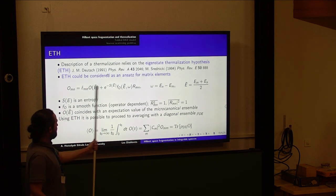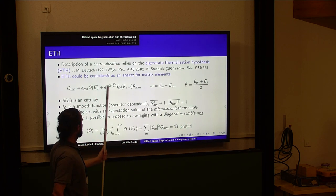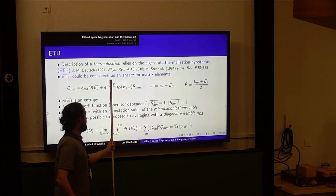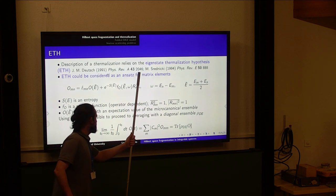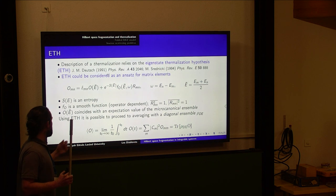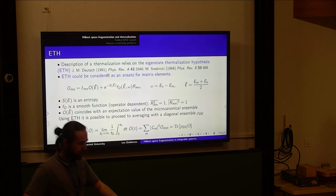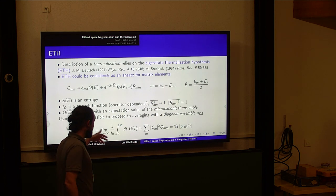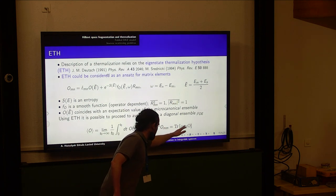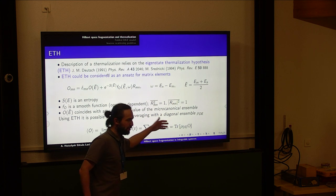People proceeded to the eigenstate thermalization hypothesis: the diagonal terms already give the expectation value in the micro-canonical ensemble, and the off-diagonal terms are suppressed exponentially in the entropy of the system at some average energy. There is a function f depending on the operator and some average energy, and coefficients r_mn that depend mostly on the state. Using ETH, people immediately proceed to time-averaging and arrive at the diagonal ensemble.